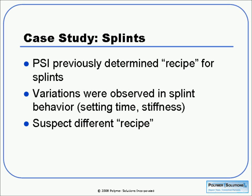Another case study deals with splints used for broken bones. PSI had been involved in a previous project for this particular client, helping them to determine an appropriate recipe for their splints. This included some thermoplastic polymer, some rubber, as well as some inorganic filler.